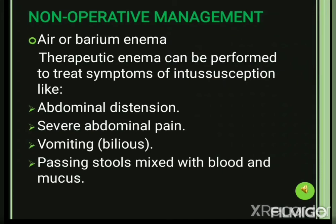As non-operative management, air or barium enema can be used to reduce intussusception in children. These enemas are used as a therapeutic method to treat symptoms such as abdominal distension, severe abdominal pain, bilious vomiting, and passage of blood- and mucus-mixed stools — red currant jelly stools. When the child presents with all these symptoms, non-operative management using these two types of therapeutic enemas is indicated to reduce the intussusception.